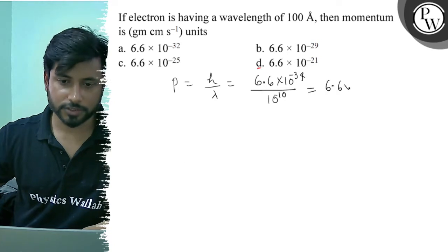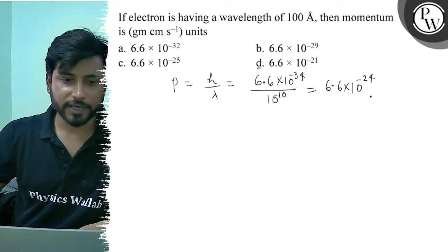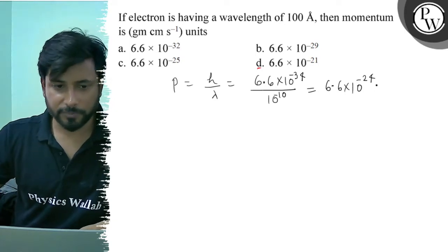So it will be 6.6 × 10^-24 momentum. Now we need gram centimeter per second and we have kg meter per second.